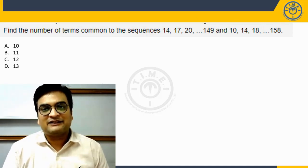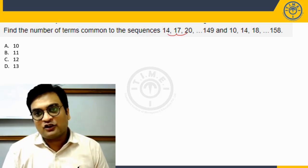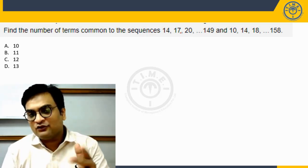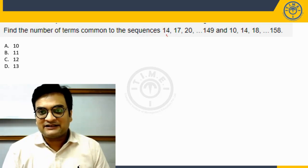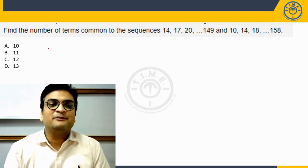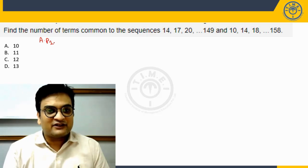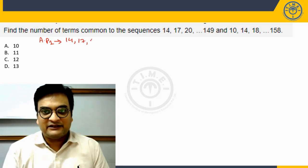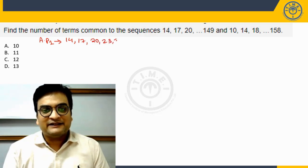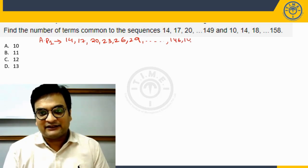Let us write down the first sequence. If you observe it closely, the difference between any two consecutive terms is constant — the difference is 3. So we can call this an arithmetic progression. AP1 is 14, 17, 20, 23, 26, 29 and so on, with 146 and 149 as the last terms.